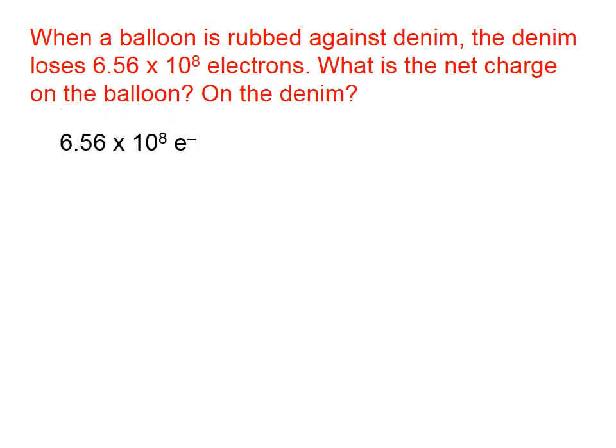If we have 6.56 times 10 to the 8th electrons, we know that one electron has a charge of magnitude equal to 1.60 times 10 to the negative 19th coulombs. So if we set up a conversion factor, cancel the electron unit, one in the numerator, one in the denominator, we get this magnitude of charge.